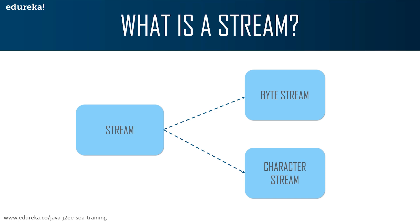Character stream is a stream which incorporates with characters. When an input and output process happens with a character, it is called the file handling process with character stream. These are the two types of streams that are available.